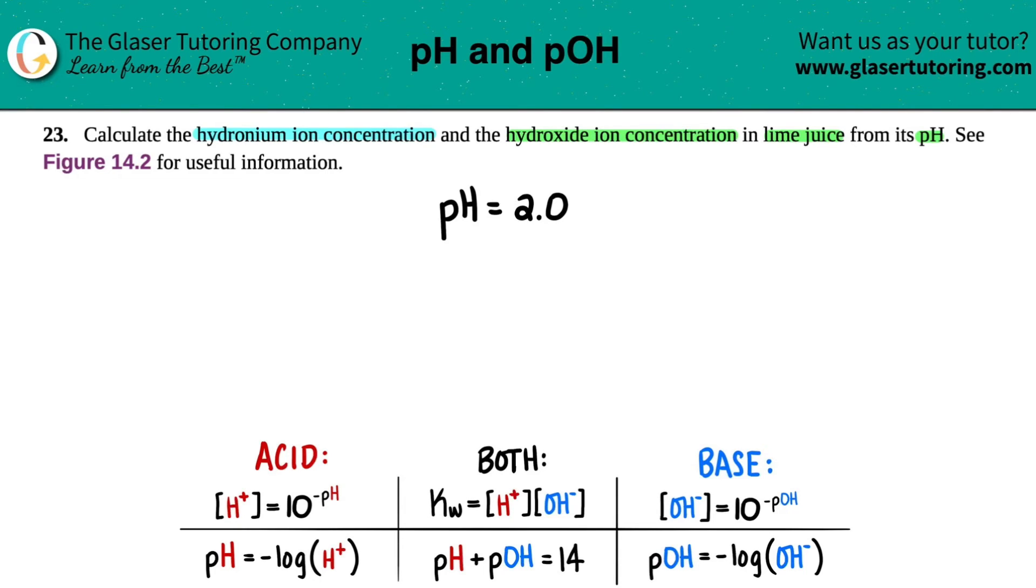So I went to figure 14.2 and I found the pH of lime juice. It looked like it was about right on the money with a pH of 2, so I just said 2.0. From there, we have a pH value and the pH is on the acidic scale. So we just have to find the hydronium ion concentration and the hydroxide.